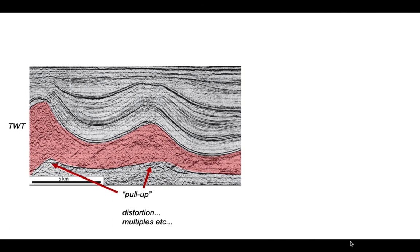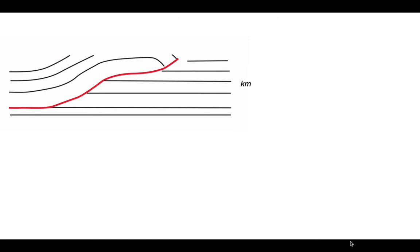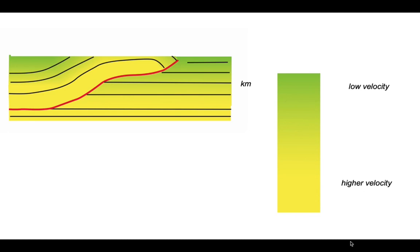Let's now move on to a thrust situation. Thrusts carry deeper rocks onto shallower ones. So before thrusting, velocity increases with depth, but the act of thrusting carries higher velocity material onto shallower rocks of lower seismic velocity. Here's a line drawing of a thrust system, and superimposing a velocity structure — yellows have higher velocities than greens — you can see that a higher velocity package has been elevated on top of the green colours in the footwall. So we've got a velocity inversion: higher velocity on top of lower velocity beneath the thrust sheet.